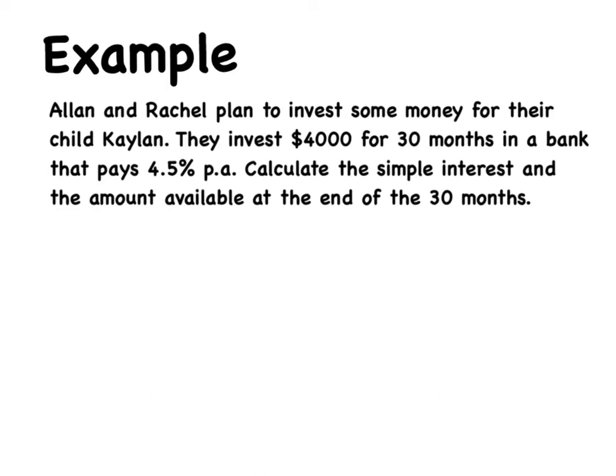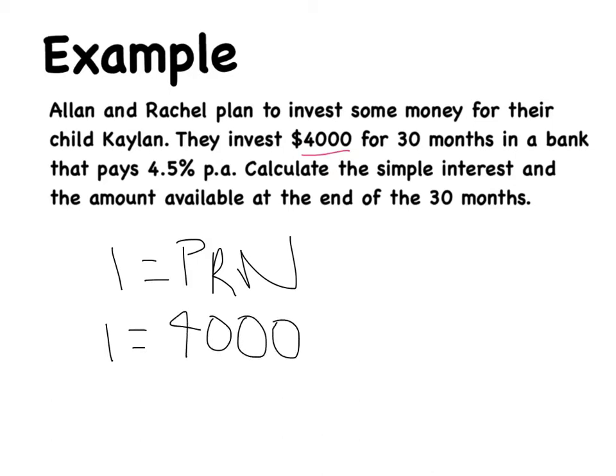Let's look at another example. Alan and Rachel plan to invest some money for their child — a lot of parents set up bank accounts for their children so later in life they can do something with it. They invest $4,000 for 30 months in a bank that pays 4.5% per annum. Calculate the simple interest and the amount available at the end of the 30 months. So I equals PRN. My principal is $4,000. Multiplied by 4.5% per annum, written as a decimal: 0.045.